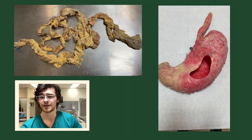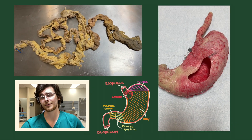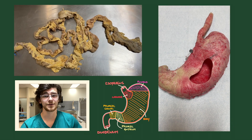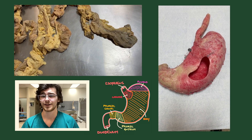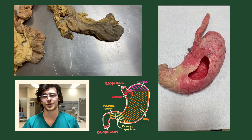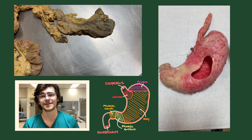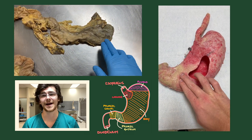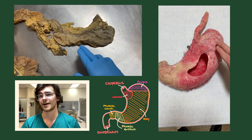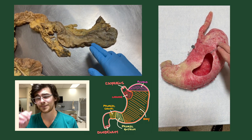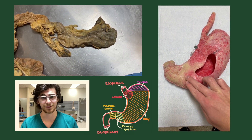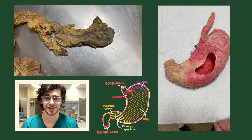The stomach is where digestion starts to really take off. The muscular layers of the stomach wall act in concert to swish the contents back and forth — a process called mixing waves. This is an example of physical digestion.